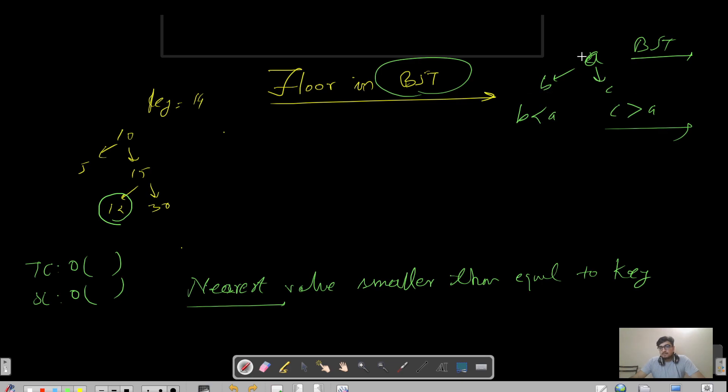Let's say we have this BST given and the key is given as 14. So what's the floor meaning here is that you need to find the nearest value that is smaller than or equals to key.